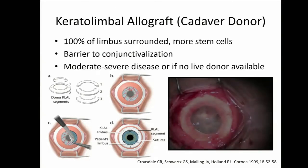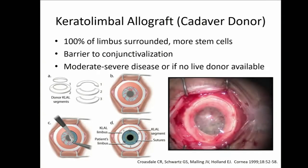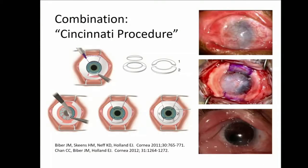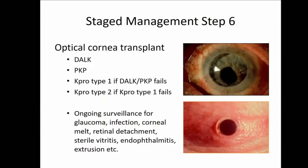Segments are secured with glue and sutures, and usually we see re-epithelialization over the course of two weeks to two months. Combination procedures are possible using live tissue at 12 and 6 o'clock and cadaver tissue at 9 and 3 o'clock, giving more goblet cell replenishment as well as a 360-degree limbal stem cell barrier. Then you can proceed to step six — optical corneal transplantation — usually trying DALK, then PKP, then K-PRO type 1 if transplants fail, and type 2 if K-PRO type 1 fails, with ongoing surveillance forever for complications.